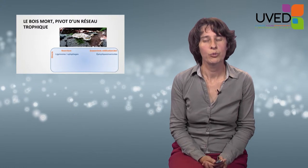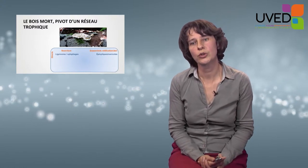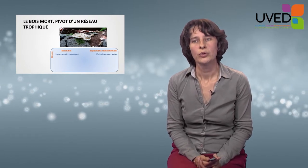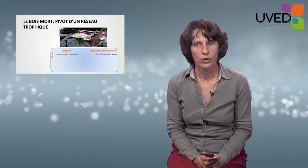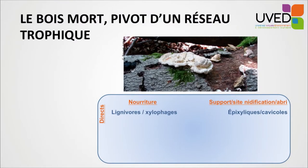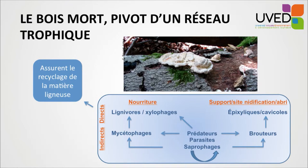This is absolutely essential for forest biodiversity. Dead wood is at the heart of a trophic network. Some organisms use dead wood or decomposing wood as a source of nutrients — these are xylophages. Other organisms use dead wood as a place to find refuge or to nest, and these organisms indirectly attract other organisms, their predators, for instance.